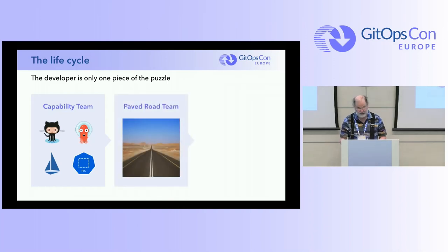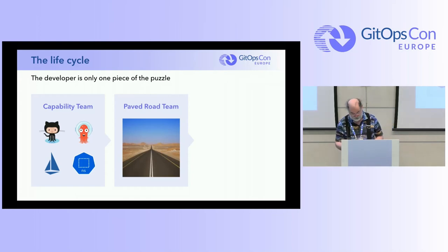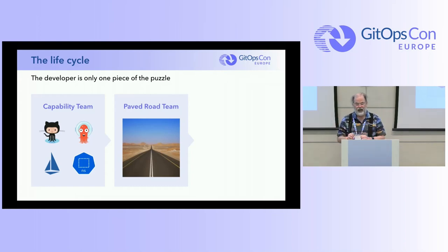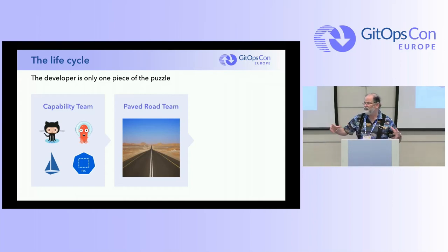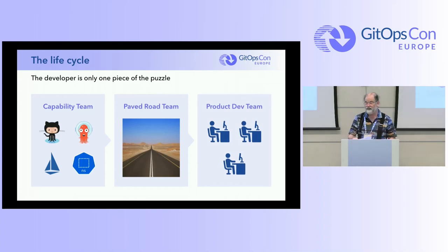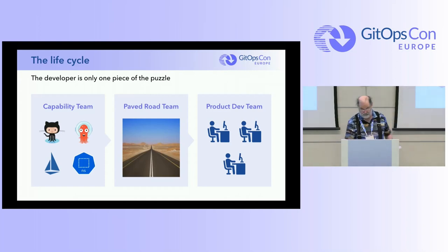The next piece to account for is a paved road team — this is an Intuit term, and I hope it becomes more general. These are people who handle a specific type of resource, such as a service or web application, and want to propagate everything in their paved road to a specific team. And then there's the product development team that wants to use the blueprints, not worry about anything else, and just push a button.